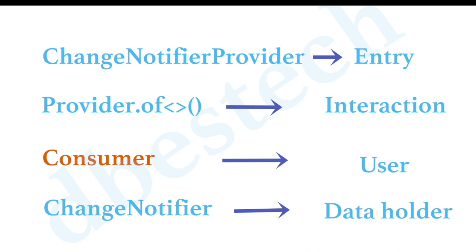We'll also have a special keyword called Consumer. Consumer is the user — it's going to use the data. So ChangeNotifier is the data holder, and Consumer is going to use the data. Then we have Provider.of, which does the interaction between the UI and the data holder. At the entry point of our app we should use ChangeNotifierProvider.